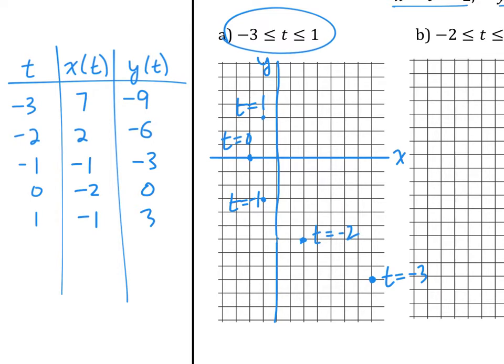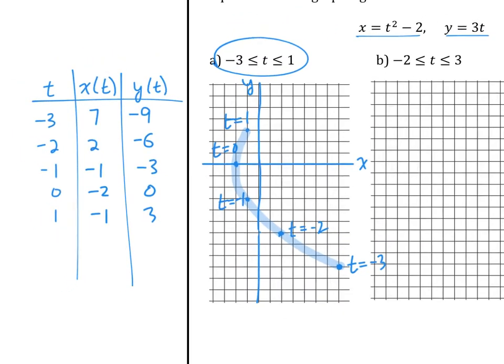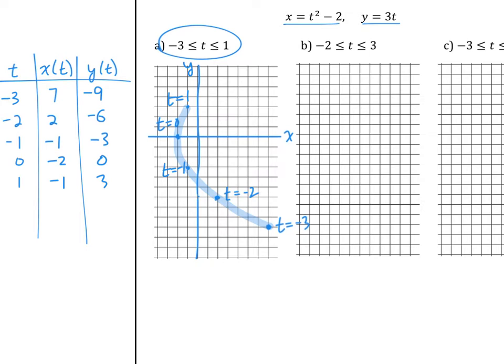If you were to connect the points with a curvy line, what kind of shape would you suspect this is? It is a parabola. If we had enough points it would look like a parabola. Now you want to be able to figure out that this is a parabola without actually graphing it. So we're going to do this thing called eliminating the parameter.